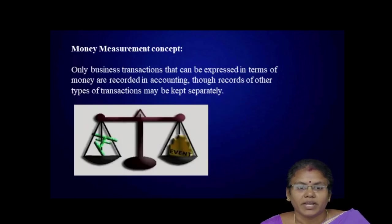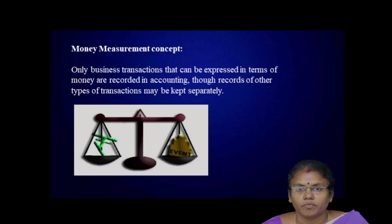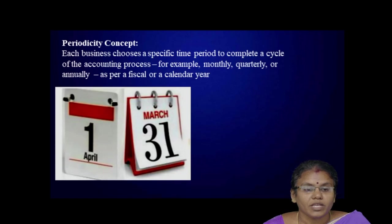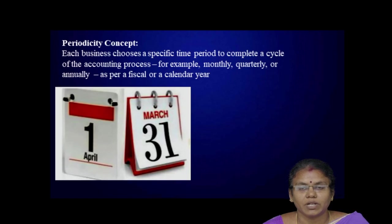Second, money measurement concept. Only business transactions that can be expressed in terms of money are recorded — for example, goods sold in value of rupees. Records of other types of transactions are kept separately. Third, periodicity concept: each business chooses a specific time period to complete a cycle of the accounting process.